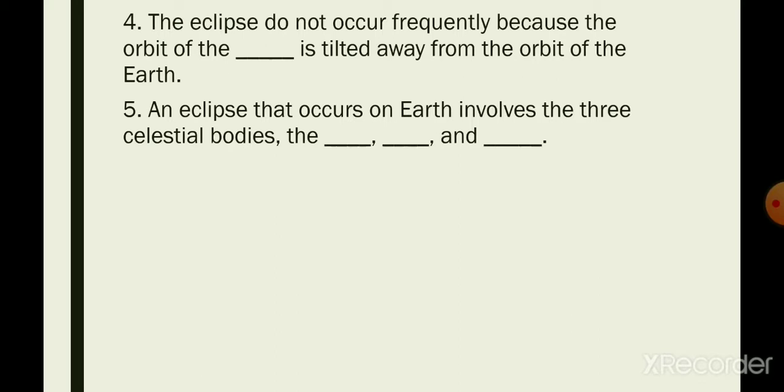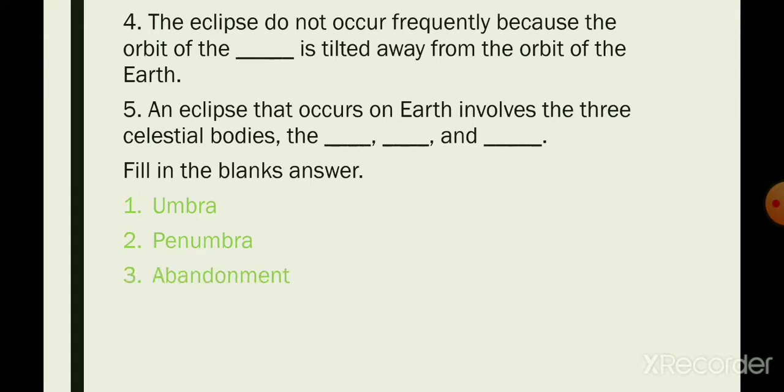Now let us see what are the answers. Number one: umbra. Number two: penumbra. Number three: abandonment. Number four: Moon. Number five: Sun, Earth, and Moon.